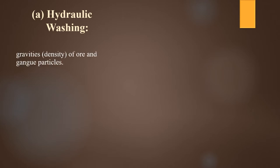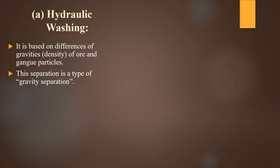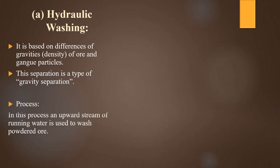Hydraulic washing is based on the differences in gravities or densities of ore and gangue particles. It is a type of gravity separation. In this process, an upward stream of running water is used to wash the powdered ore. The ore must be in powdered form for this process.